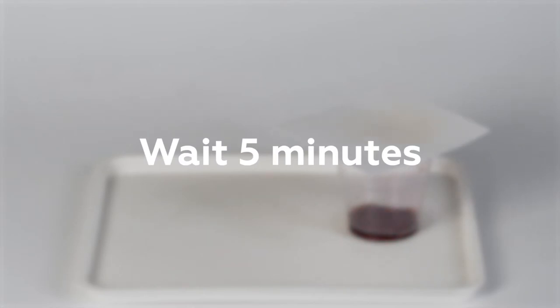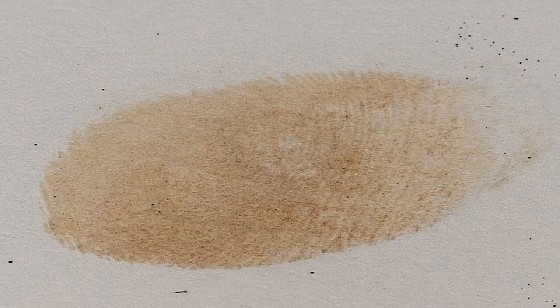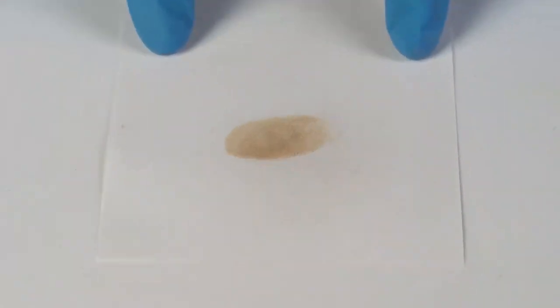Hydrogen peroxide reacts with potassium iodide to form elemental iodine. The lines of the fingerprint contain an oily residue, which dissolves the iodine vapor. This is why the fingerprint becomes visible on the paper.